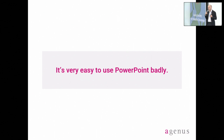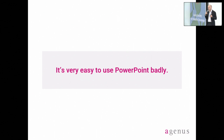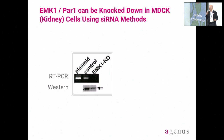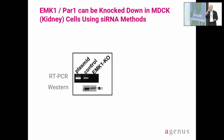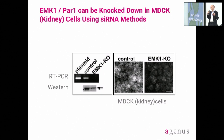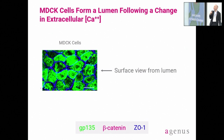It's very easy to do things badly — do as I say, not as I do. This is obviously very, very bad, for example. But it takes time to use PowerPoint well — it's like being a bad doctor is very easy, but being a good doctor is very hard. Let's break down the previous slide into its components. Here is a basic model showing that this particular gene could be knocked down in kidney cells using siRNA — very, very straightforward. Everyone understands this from an RT-PCR showing mRNA levels and a Western blot showing protein levels. Now, these cells form a lumen — they form a tube following a change in extracellular calcium — and again, very pretty.